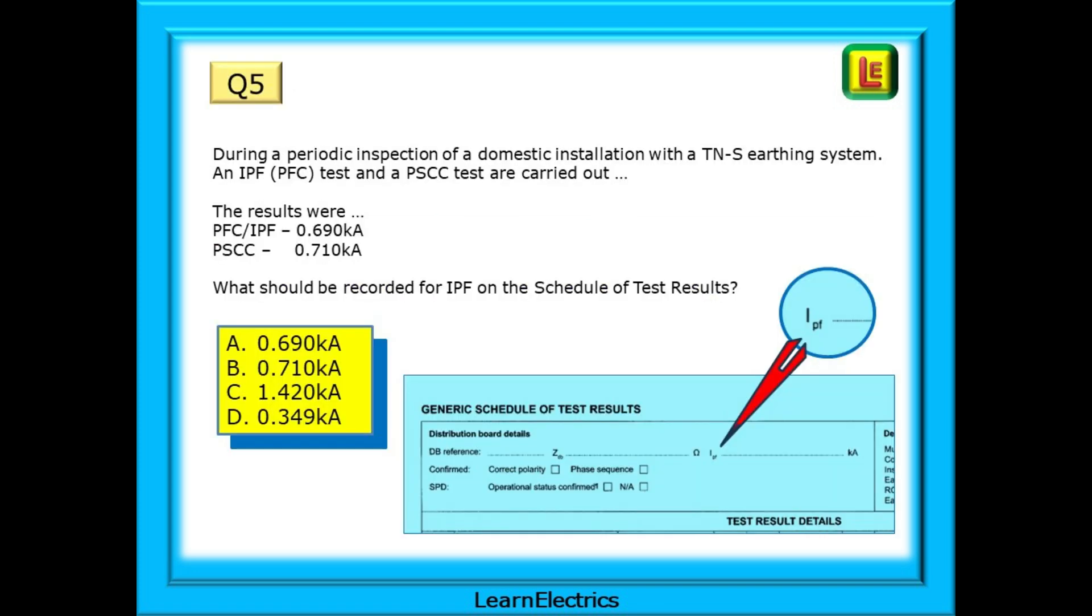Here's the question. During a periodic inspection of a domestic installation with a TNS earthing system, an IPF or PFC test and a PSCC test are carried out. The results are as shown here. What shall be recorded for IPF on the schedule of test results? Pause the video and have a go at the answer yourself.